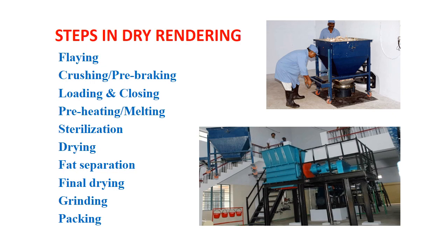As temperature increases, melting starts, steam pressure builds up, and higher temperature leads to sterilization. After sterilization is complete, the process moves to the drying stage: a specific valve is opened to outlet moisture, releasing all the steam — a process that may take a long time. After drying, the steam pressure is reduced to zero, then the outlet is opened and material is unloaded into the percolating tank, where much of the liquid fat directly separates. Remaining fat with solid is separated mechanically. The solid material is then dried, ground, and packaged.